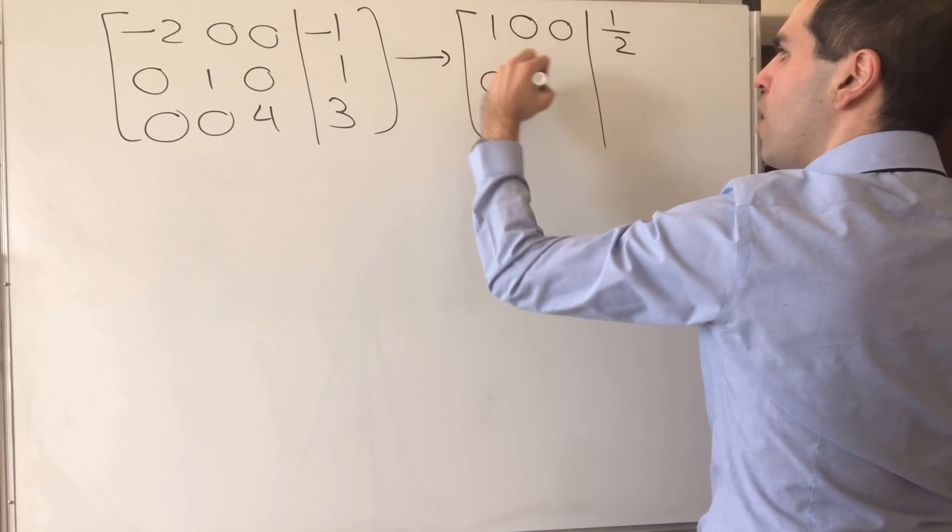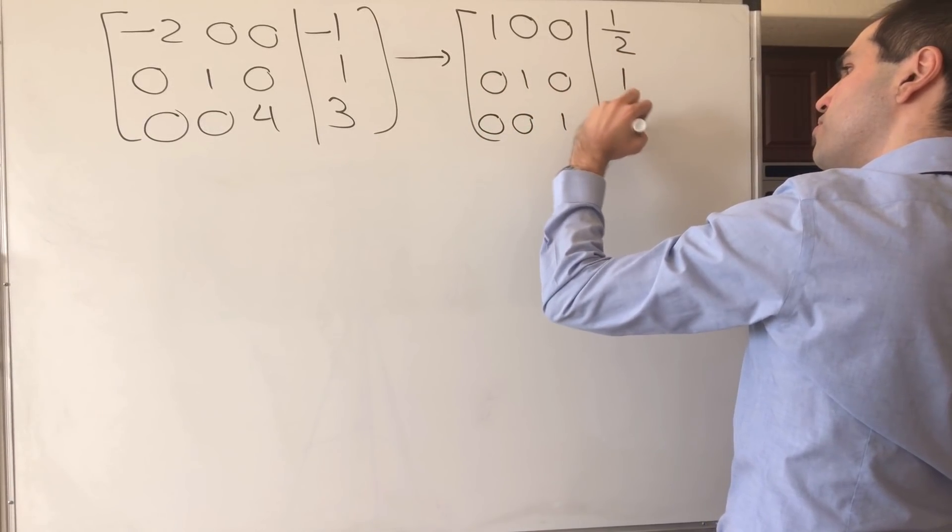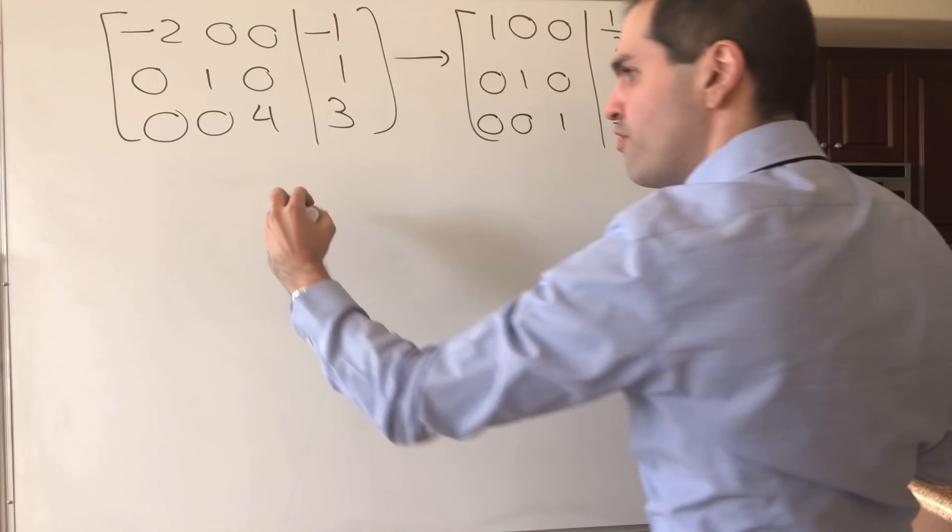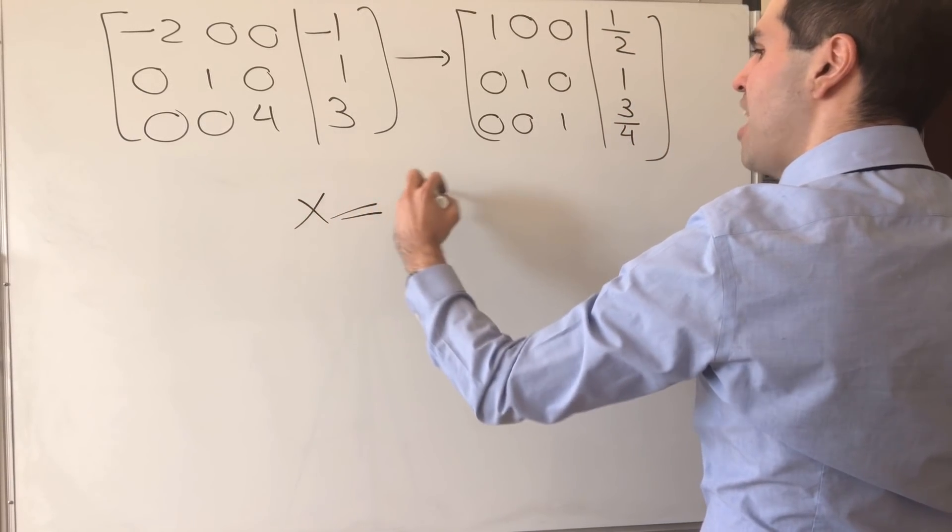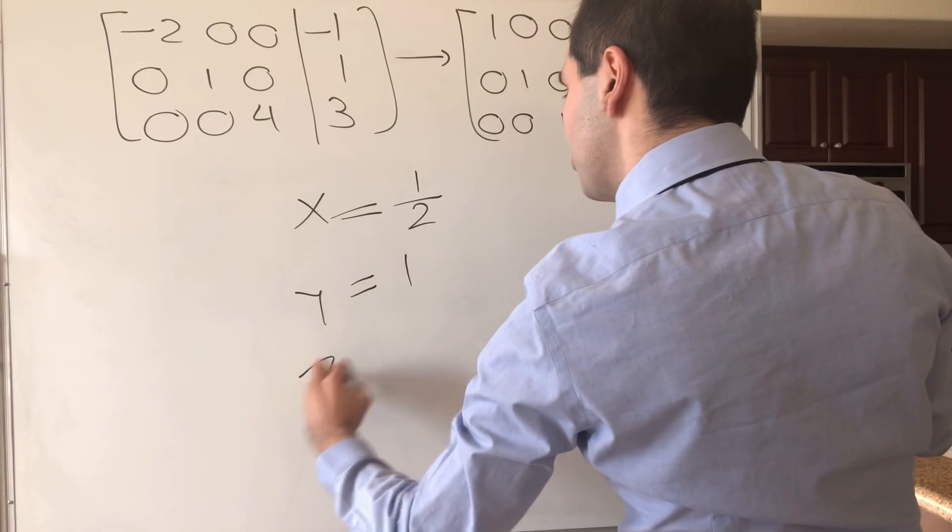0, 1, 0, 1, and then 0, 0, 1, 3 quarters, which, therefore, gives you the solutions, x equals 1 half, y equals 1, and z equals 3 quarters.